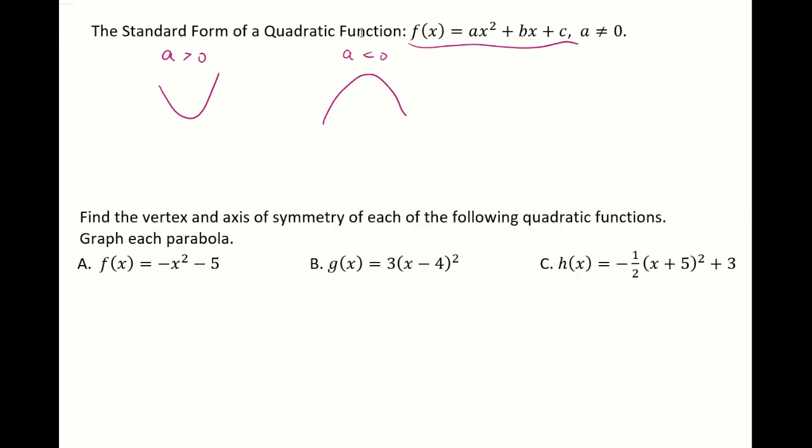The highest or the lowest point of the parabola is called the vertex, and the line that is cutting the graph in two symmetrical parts is called the axis of symmetry.